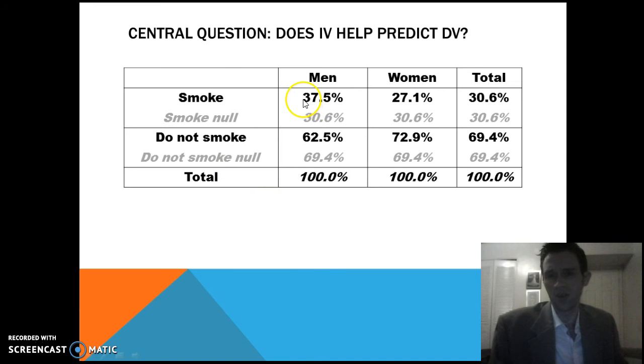We have 37.5% of men who smoke compared to 27.1% of women. Let's just focus on the smoking category right now and kind of ignore the do not smoke category. So what would it look like if the independent variable didn't help predict the dependent variable? What would it look like if the independent variable didn't help predict the dependent variable? It gives us no new information.